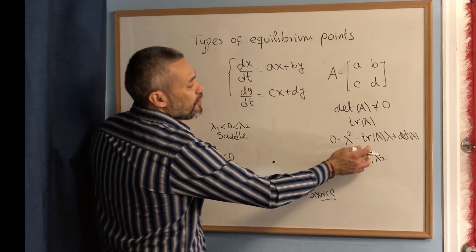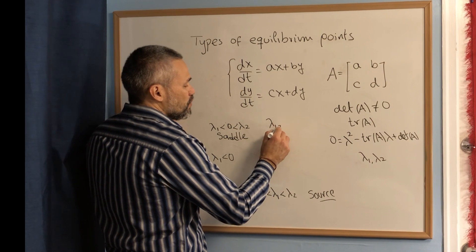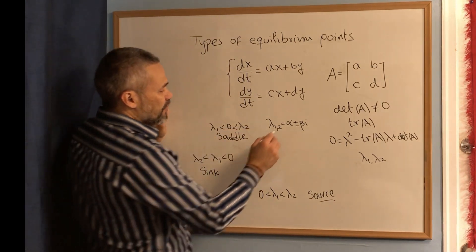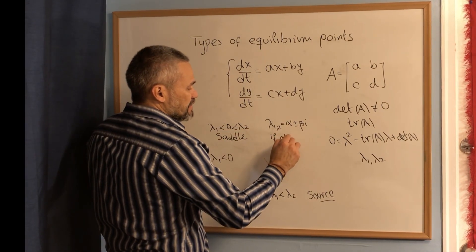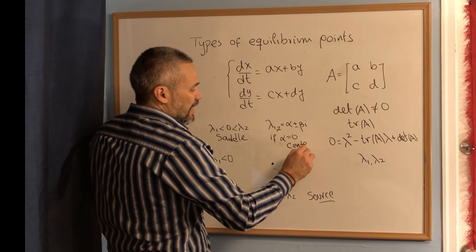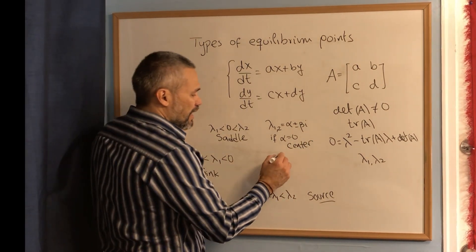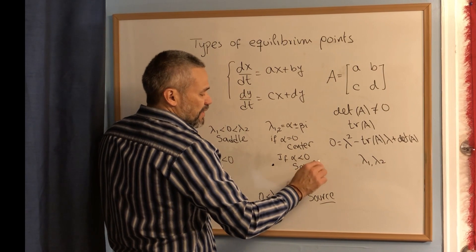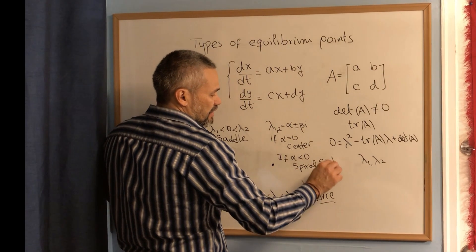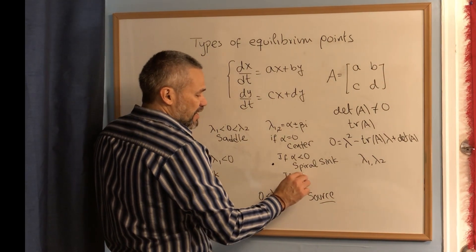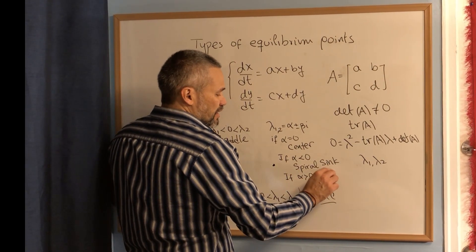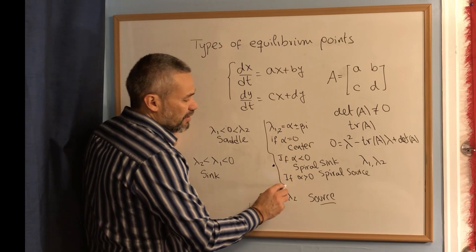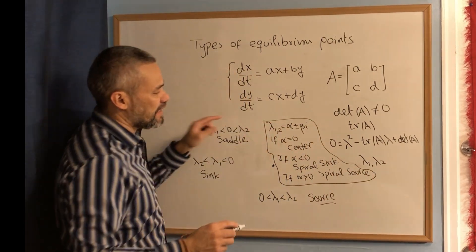If we have complex eigenvalues — say lambda 1 and 2 are of the form alpha plus or minus beta i — then we have three possibilities. If alpha equals 0, we have what is called a center. If alpha is smaller than 0, we have what is called a spiral sink. And if alpha is bigger than 0, we have a spiral source. Remember that all of these are the possibilities when we have complex eigenvalues.